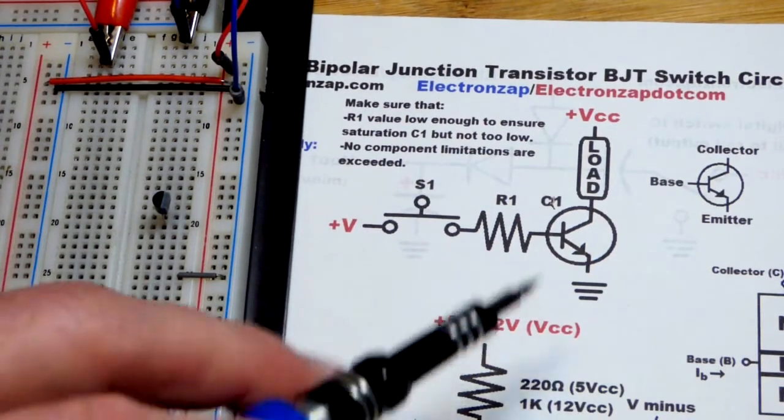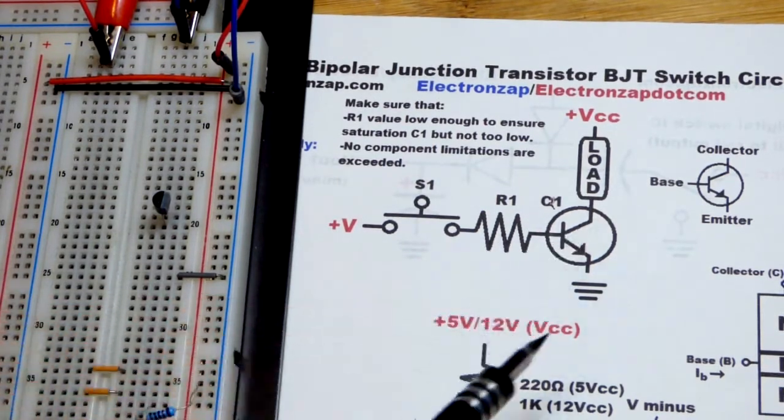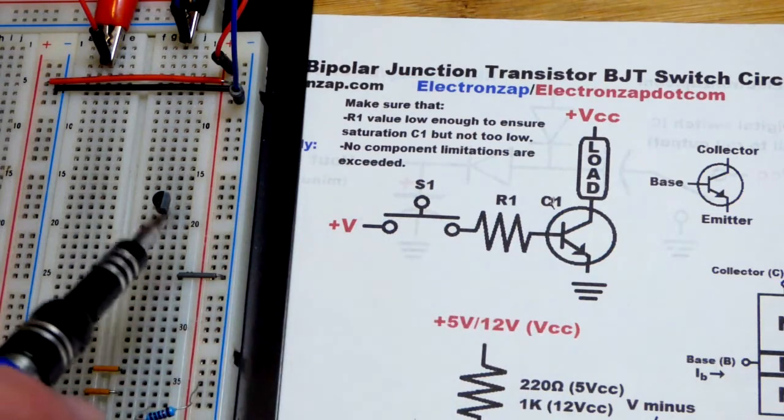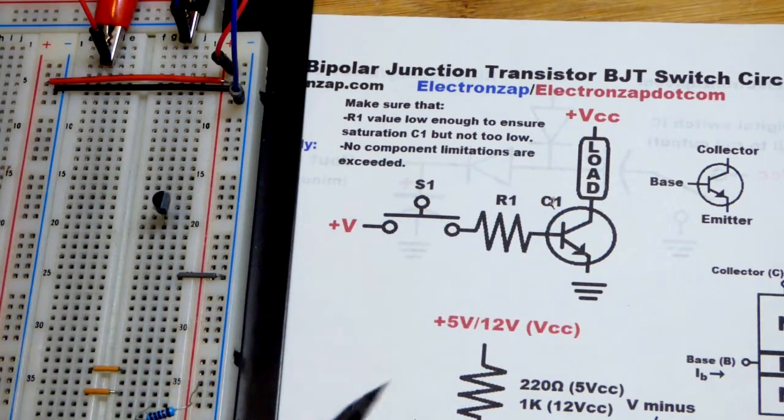In this video we're going to look at using the NPN bipolar junction transistor. We're going to use the 2N3904 as a switch.